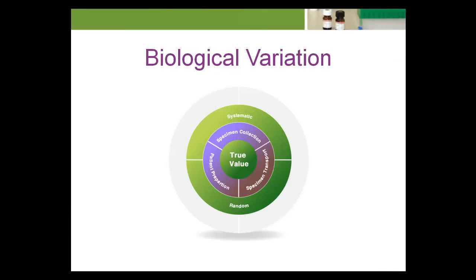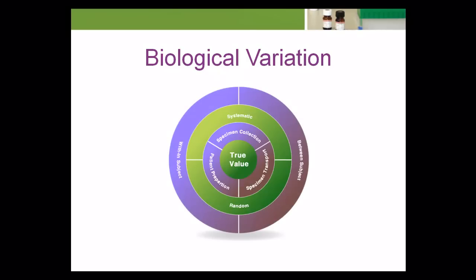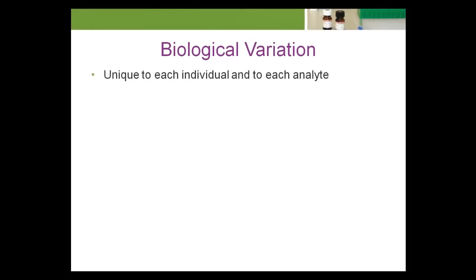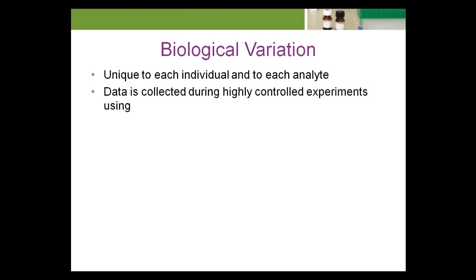The third type of variation we'll look at is biological variation, BV. Biological variation is the naturally occurring fluctuations or variations in the concentration of an analyte through time and naturally occurring conditions. The homeostatic setting point is the value in an individual around which this variation occurs. Biological variation is unique to each individual and to each analyte. Biological variation data is collected during highly controlled experiments using native human serum, plasma, whole blood, or urine.